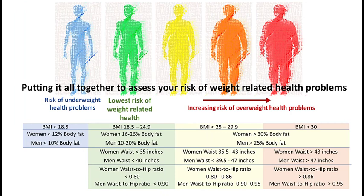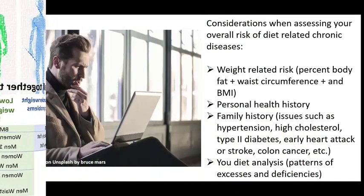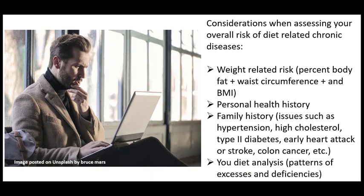A high or low BMI may indicate that you are at risk for health problems associated with being overweight or underweight. Taken together, the percent body fat, body shape, and BMI can be useful as part of a health assessment to determine if you have risk for chronic diseases associated with body weight. If you add those factors to your family history of problems such as hypertension, type 2 diabetes, and elevated cholesterol levels, and your information about your normal eating patterns — for example, are you constantly getting too much saturated or trans fats, too much sugar, not getting enough calcium — you can get a pretty good assessment of your general risk for diet-associated chronic health issues.